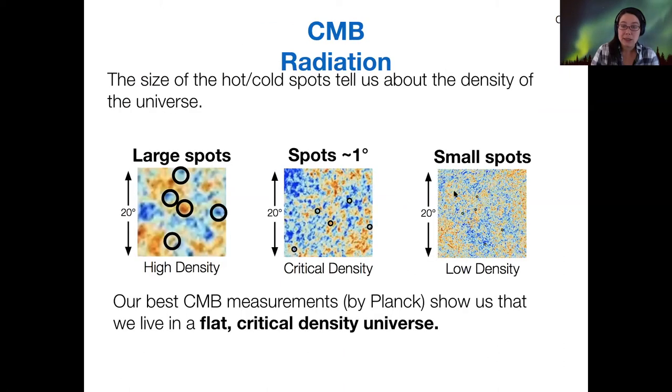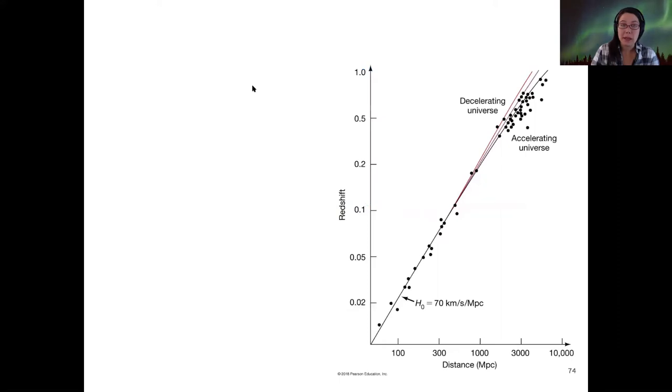So when we actually measure the density using the cosmic microwave background radiation, again, this is review, our best measurements from the Planck satellite show that we live in a flat critical density universe. So when we go back to our models again, we need to incorporate that critical density.